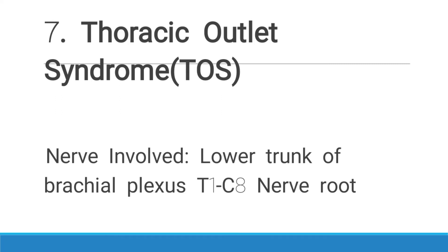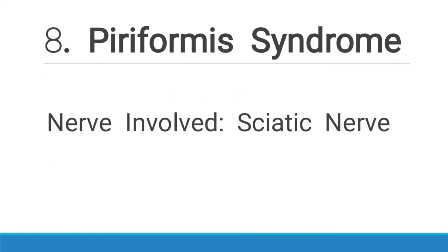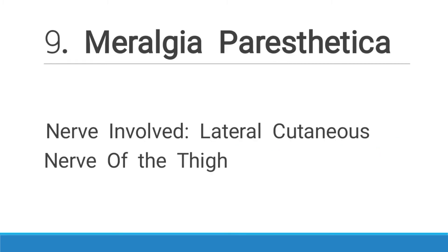Number seven is thoracic outlet syndrome. The nerve involved here is the lower trunk of the brachial plexus — nerve roots T1, T2, and C8. It is commonly abbreviated as TOS. Number eight is piriformis syndrome, and the nerve that has been damaged here is the sciatic nerve. Note that the sciatic nerve is the longest nerve in the body.